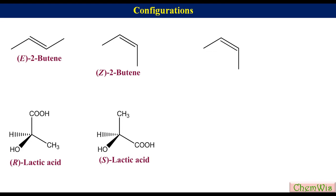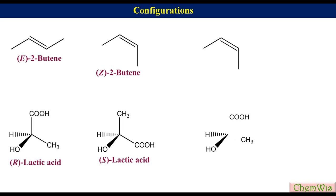Similarly, if we want to convert R-lactic acid to S-lactic acid, we will have to break the two C-C bonds, exchange the positions of the methyl and carboxylic groups, and then remake the two C-C bonds.